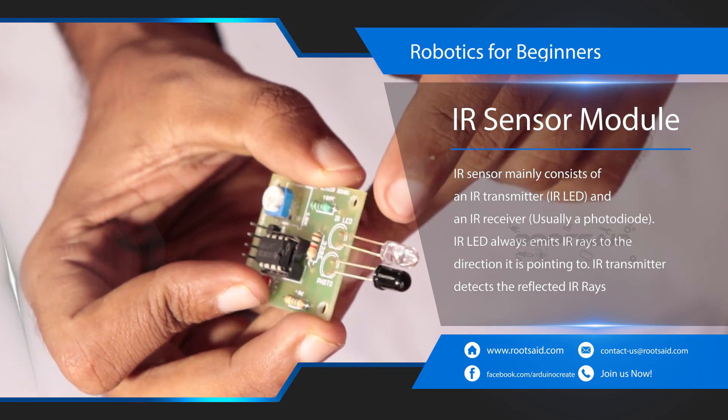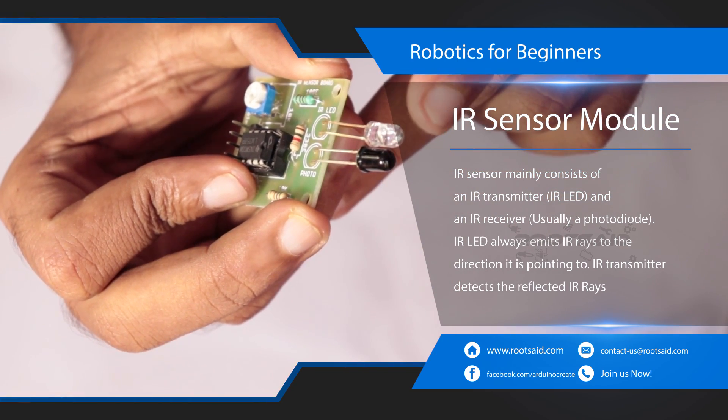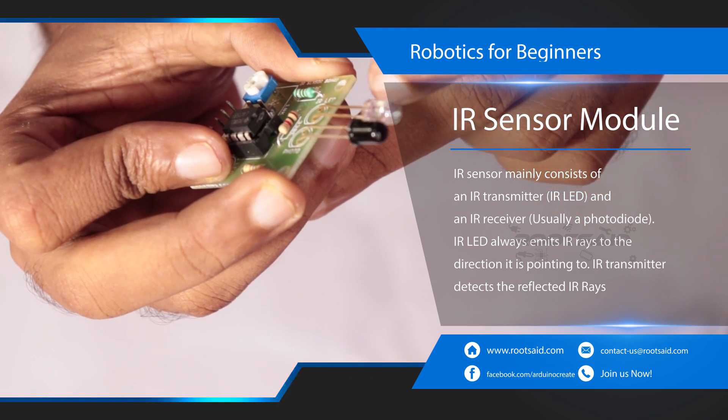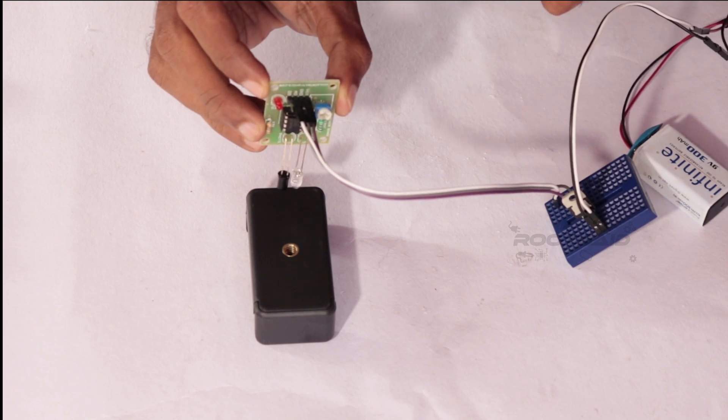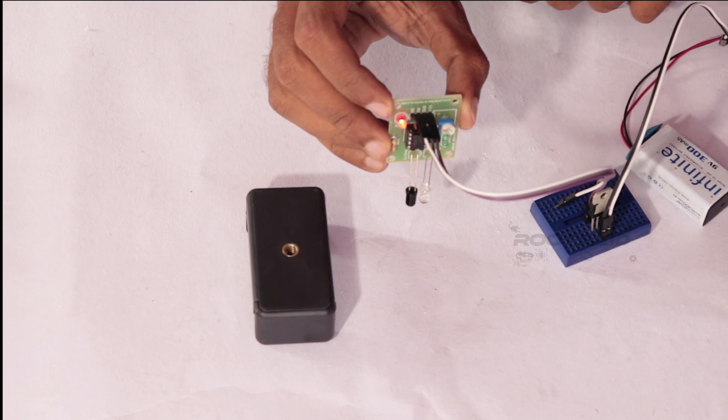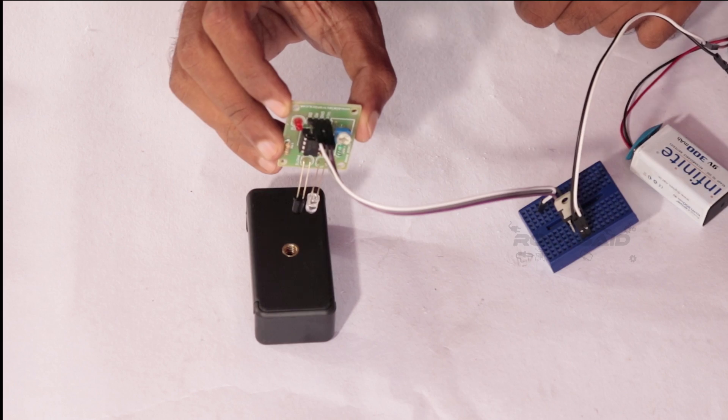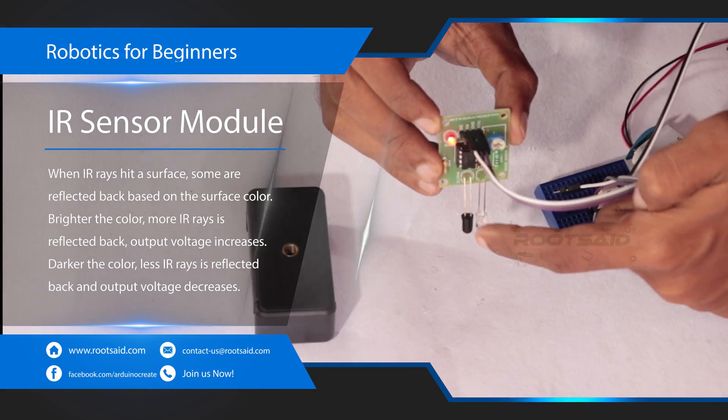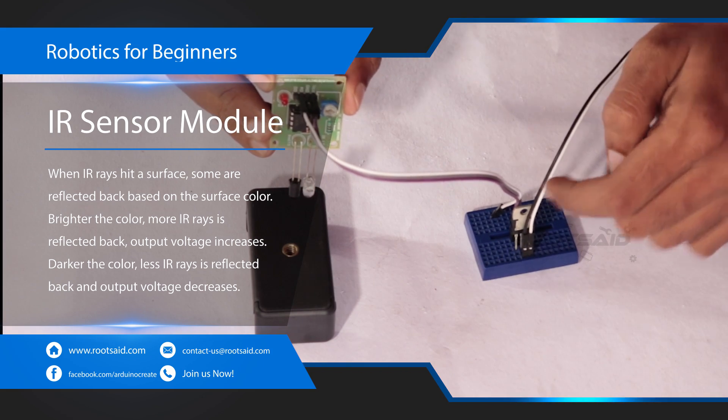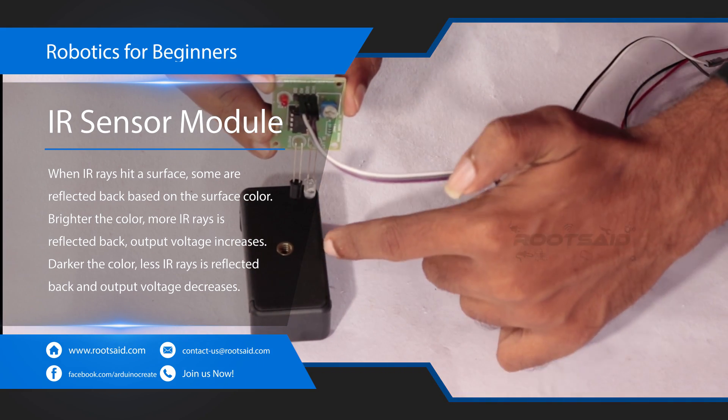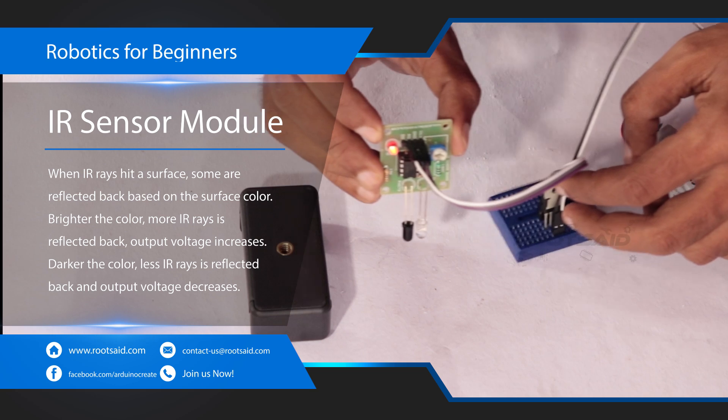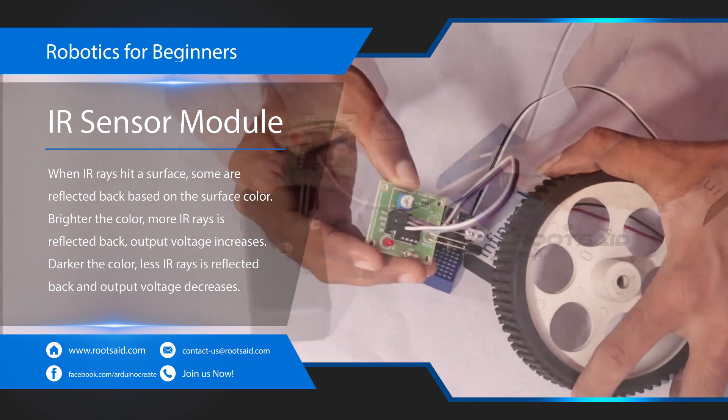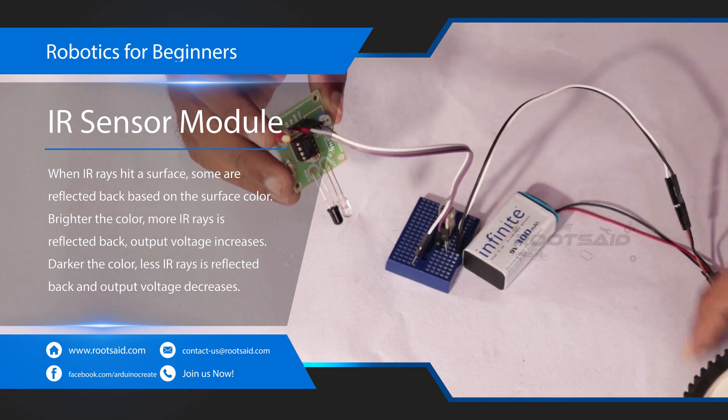IR sensors mainly consist of an IR transmitter, an IR LED and an IR receiver, usually a photodiode. IR LED always emits IR rays to the direction it is pointing to. Now, let us bring it closer to a surface. When the IR rays hit a surface, some rays will be reflected back depending upon the color of the surface. Which means, the brighter the color is, the more IR will be reflected back. The darker the color is, more IR will be absorbed by the surface and lesser IR rays will be reflected back. These reflected rays are received by the photodiode and depending upon the intensity of the received IR rays, the resistance of the photodiode varies, which will in turn vary the output voltage.